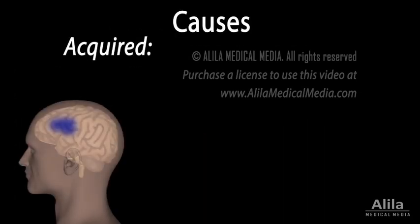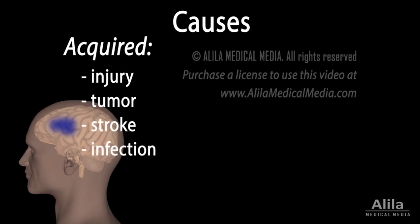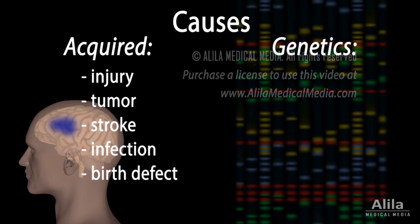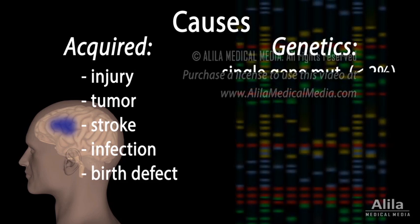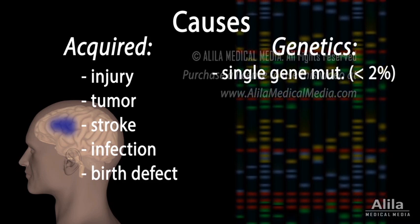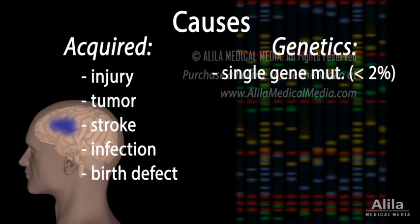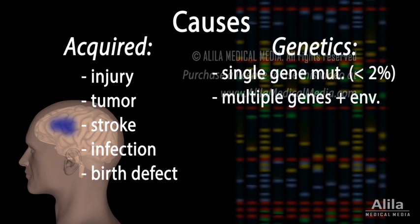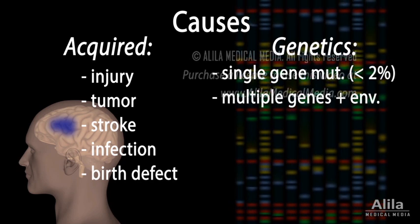Epilepsy may develop as a result of a brain injury, tumor, stroke, previous infection, or birth defect. Generalized seizures that start in childhood are likely to involve genetic factors. Epilepsy due to a single gene mutation is rare. More often, an interaction of multiple genes and environmental factors is responsible.